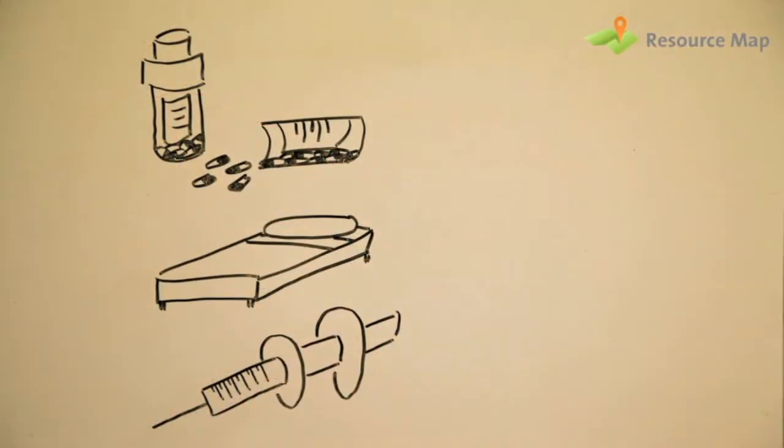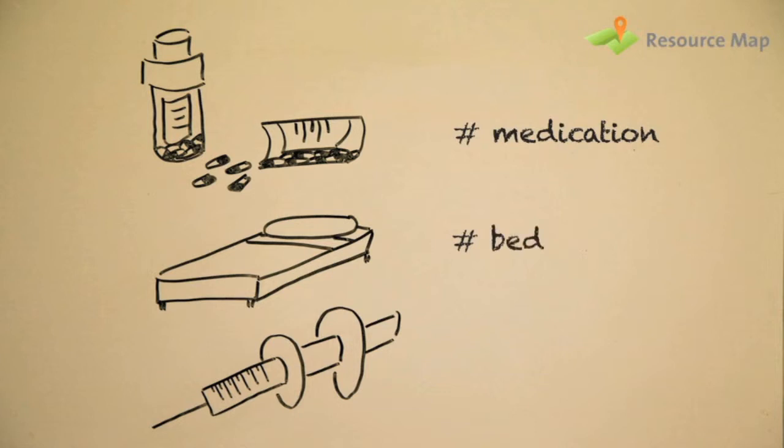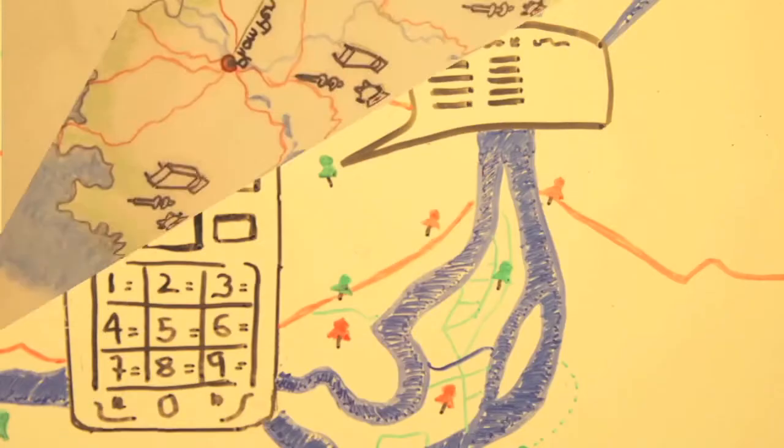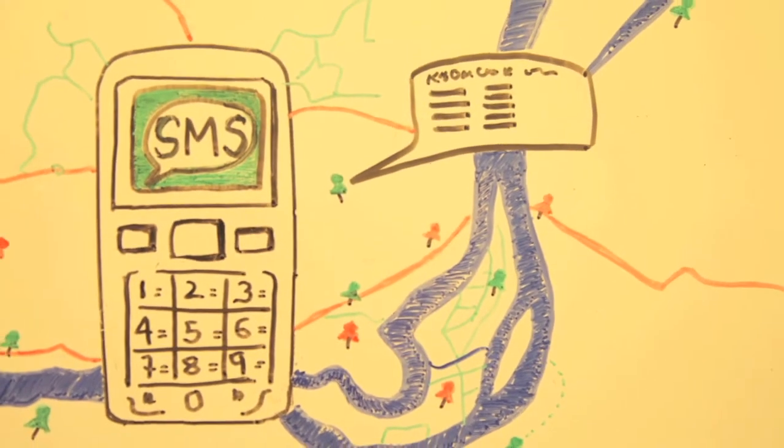Using Resource Map, Headquarters uses their computers to check for supplies in the area in real-time, while the response teams check on their mobile phones.